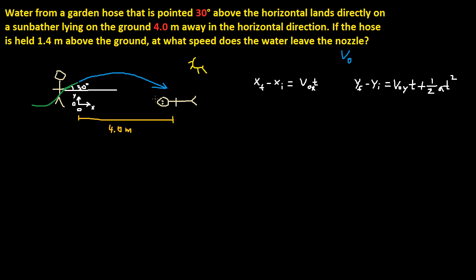And from the sunbather to the point of the nozzle — because this is the point of the nozzle — that would be 1.4 meters. I'm sure all of you have the same measurement for that one.